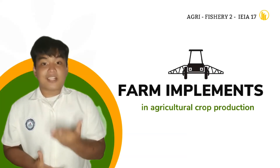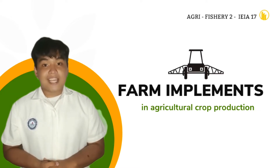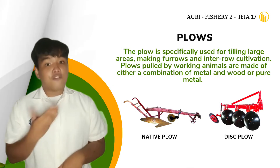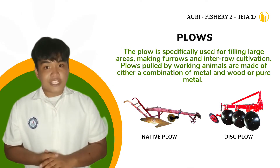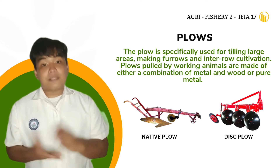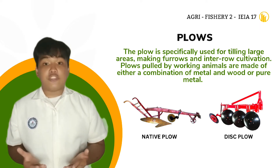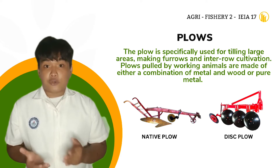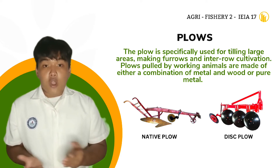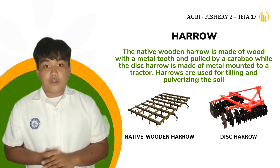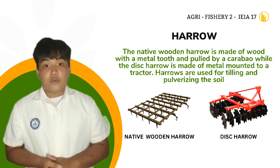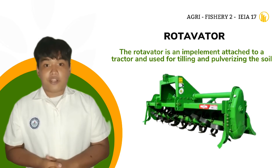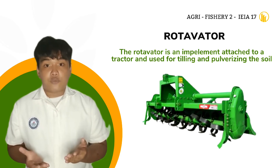Second, Farm Implements. These are accessories which are being pulled by working animals or mounted to machineries like hand tractor or tractor, which are usually used in preparation of land. These are usually made of a special kind of metal. These are Plows — farm implements used in horticultural operation, either pulled by a working animal or a tractor. The plow is specifically used for tilling large areas, making furrows, and inter-row cultivation. Plows pulled by a working animal are made of either a combination of metal and wood or pure metal, used for tilling areas with a shallower depth than the disc plow which is pulled by a tractor. Harrow — the native wooden harrow is made of wood with metal teeth and pulled by a carabao, while the metal harrow is mounted to a tractor. Harrows are used for tilling and for leveling the soil. Rotavator — an implement attached to a tractor, used for tilling and for leveling the soil.